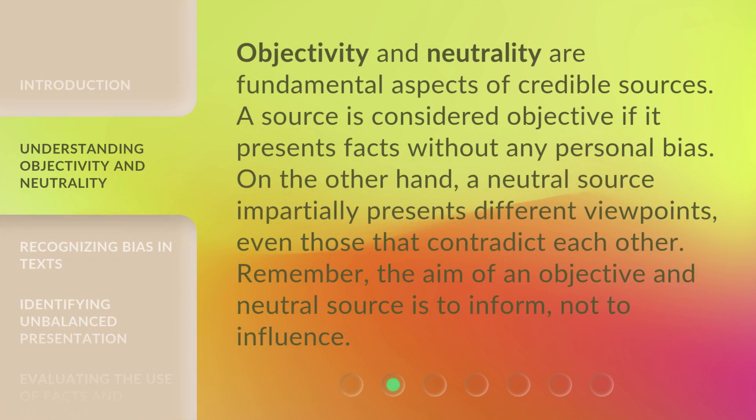Objectivity and neutrality are fundamental aspects of credible sources. A source is considered objective if it presents facts without any personal bias. On the other hand, a neutral source impartially presents different viewpoints, even those that contradict each other.